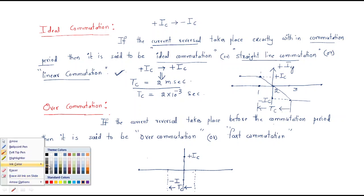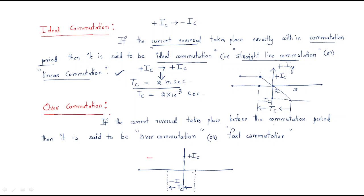Just observe here — initially the current is positive up to position 1. After that it will change very quickly to minus IC. This is position 1, position 2, and position TC. It will reach minus IC before the commutation period ends. So the current reversal time is less than the commutation time — this is called over commutation or fast commutation.